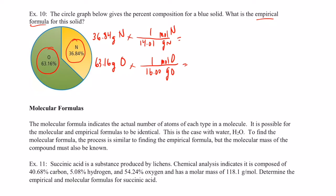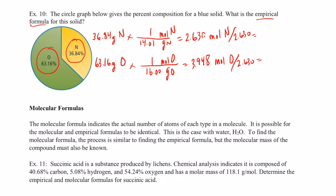And we'll put grams of oxygen on the bottom, moles of oxygen on the top — one mole of oxygen is 16.00 grams per mole. So this gives us moles of N and moles of O. We'll do our math: 36.84 divided by 14.01 gives me 2.630 moles of nitrogen, and 63.16 divided by 16 gives me 3.948 moles of oxygen. Those certainly are not whole number ratios.